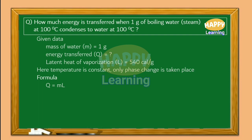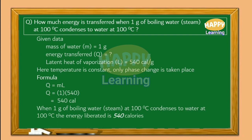Substituting the values — 1 in place of M and 540 in place of L — on simplification the value is 540 calories. Therefore, when 1 gram of boiling water at 100 degrees Celsius is condensed to water at 100 degrees Celsius, the energy liberated is 540 calories.